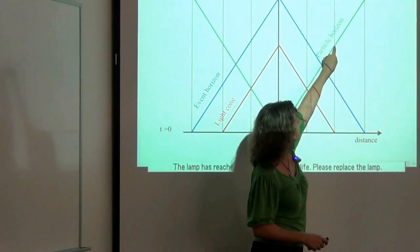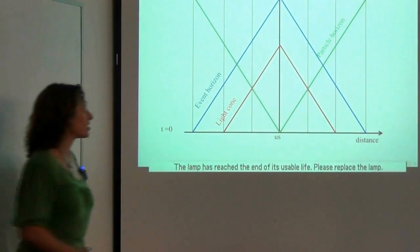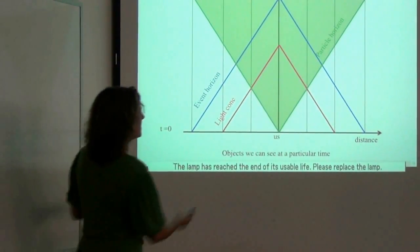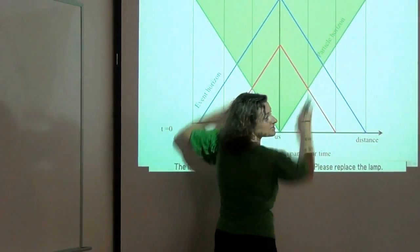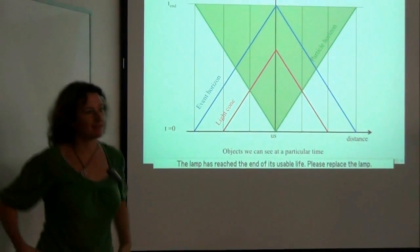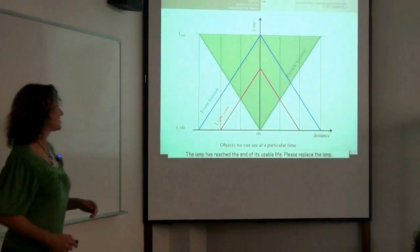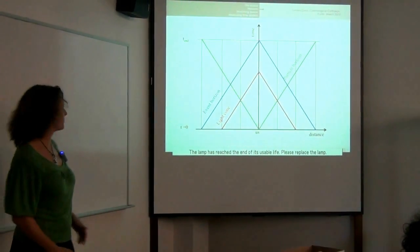And so we see that object as it was in the past. And so at any particular time, the objects that we can see are the objects that are in our particle horizon. So let's put this on an actual real picture of the universe.